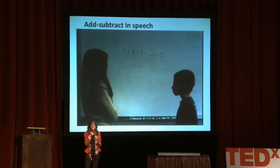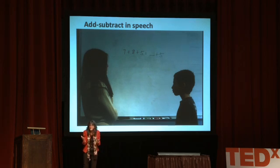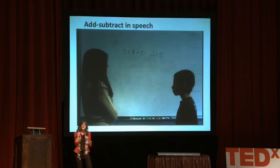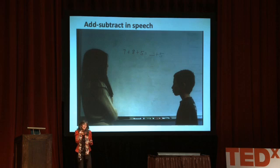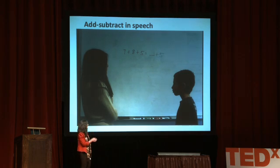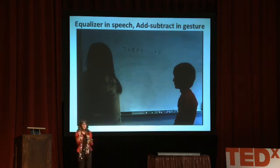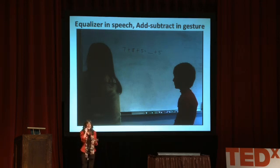Those are two very good strategies. Some teachers use them on the same problem, and when they do, they have to do it sequentially — you can't say two things at once. But notice if you did one of those strategies in gesture, you could produce the two simultaneously. So here's the same teacher producing an equalizer strategy in speech, but producing an add-subtract strategy in gesture.